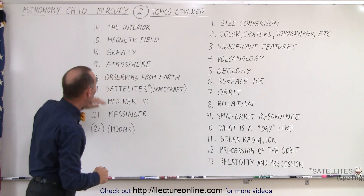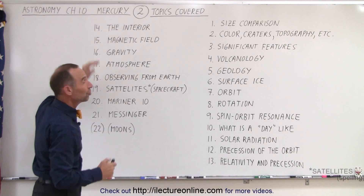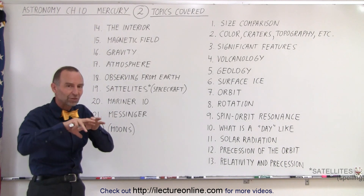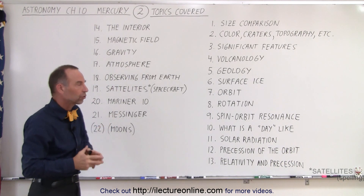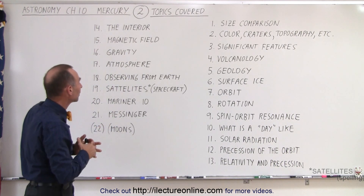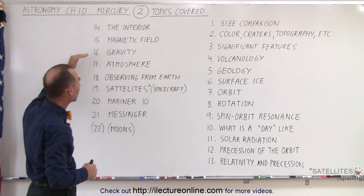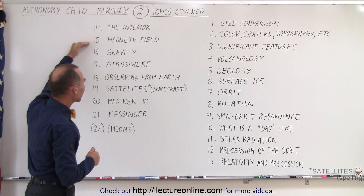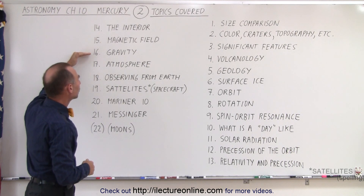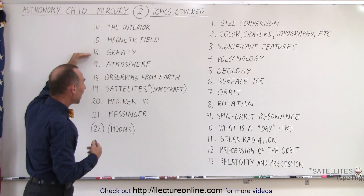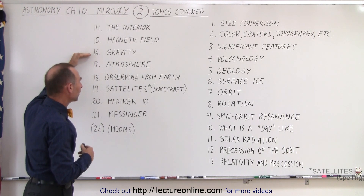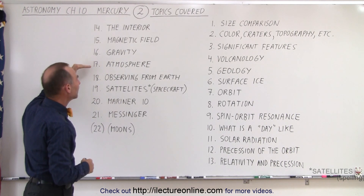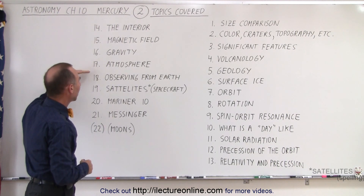Then we're going to talk about the interior of the planet — what does the interior structure look like and what is contained within it. We're going to talk about the magnetic field in more detail, the gravity on the surface of the planet, and the atmosphere of the planet.